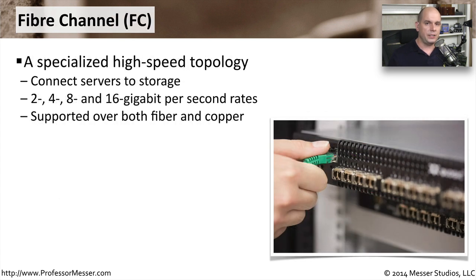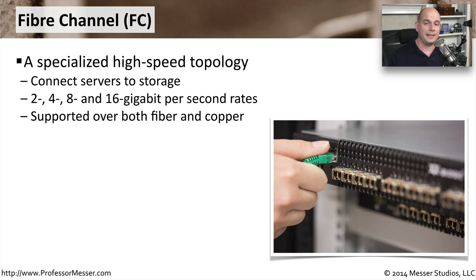The need for such high rates of speed across these storage networks has really driven the creation of a specialized topology called fiber channel. This fiber channel technology connects directly from a server with a fiber channel port to the storage, which also has a fiber channel port. These are very high rates of speed — you can run from 2 gigabits per second all the way up to the modern versions of 16 gigabits per second over that fiber channel link. Although the initial implementations of fiber channel ran over fiber optic technology, today's modern version of fiber channel will run over both fiber and copper cables.